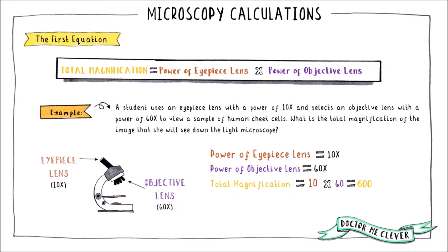So we multiply the power of the eyepiece lens which is 10 by the power of the objective lens which is 60. 10 times 60 is 600, therefore the total magnification is 600 times or 600x.